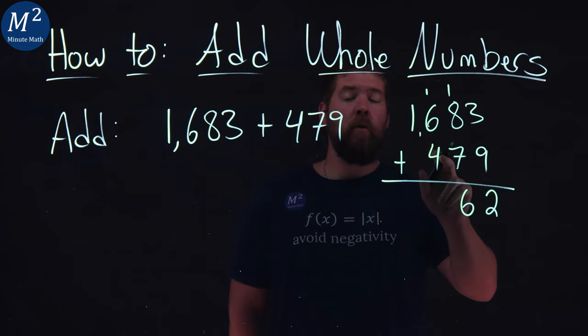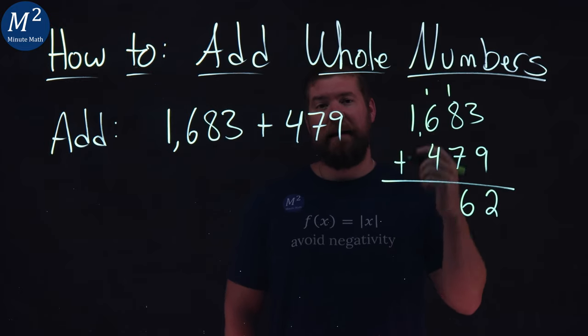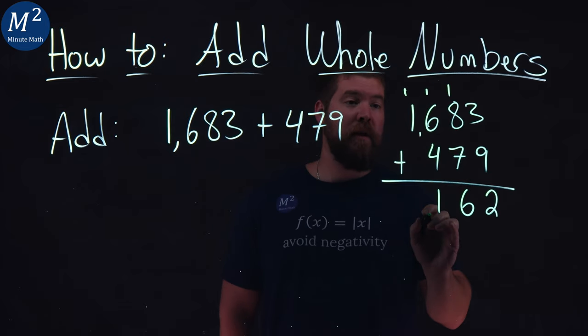Then we have 1, 6, and 4. 6 and 4 gives me 10, add a 1 to that, and we get 11. 1 comes down here, we carry that other 1 for the 11 up there.